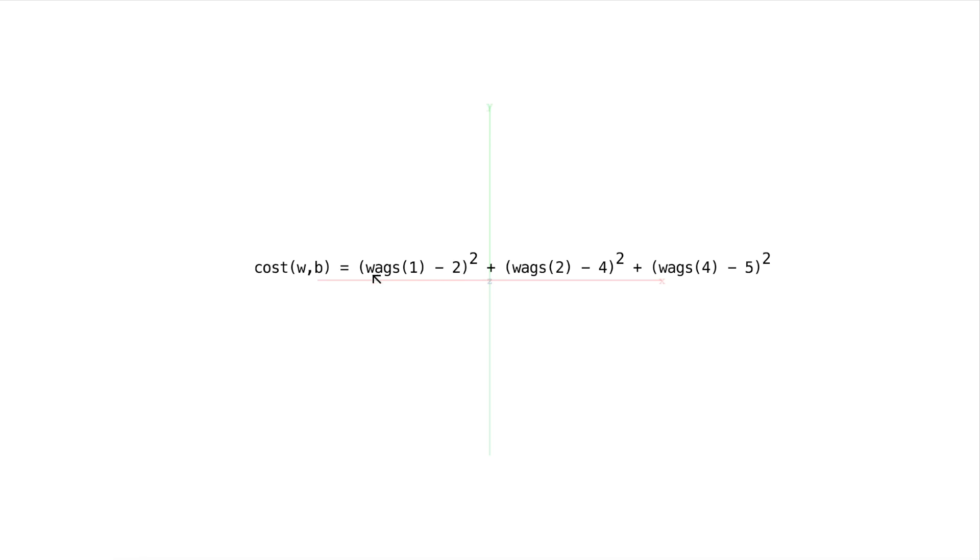So our model, given the number of pats, tries to predict the number of times our farmer's dog will wag his tail, and we know how many times the dog wagged his tail. It was two times for one pat.